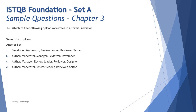Let's look at the very first question of this chapter — question number 14: which of the following options are roles in a formal review? Now, as I would have highlighted in my tutorials, there are some standard roles called out during a formal review process. The standard roles include author, manager, moderator, review leader, scribe, and reviewers.